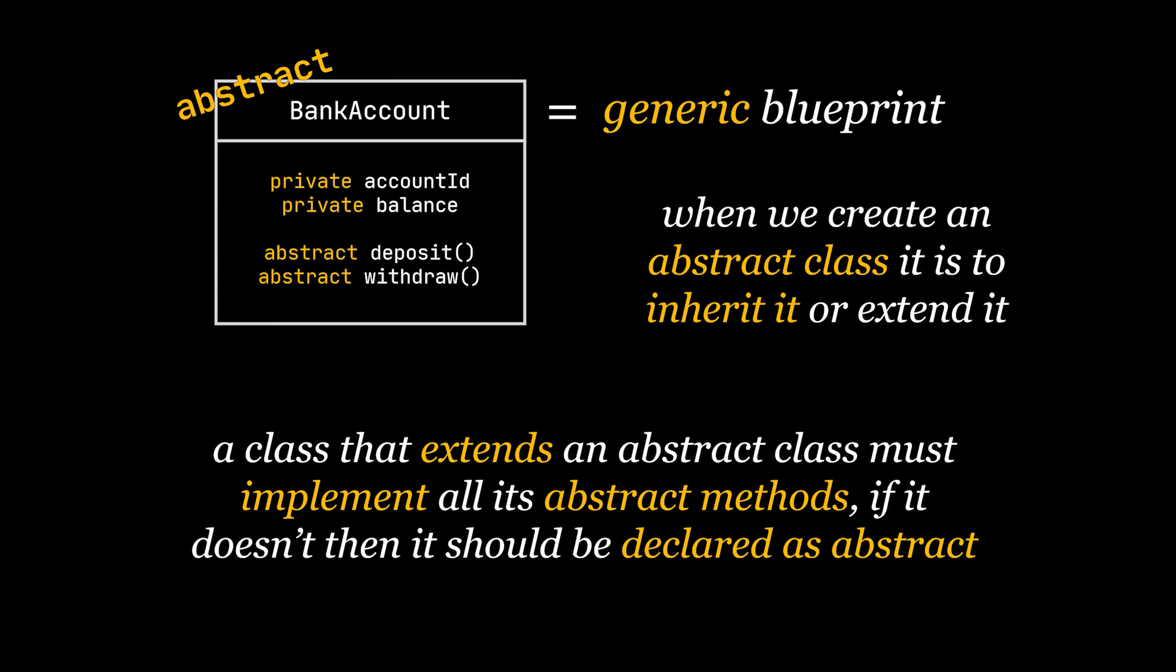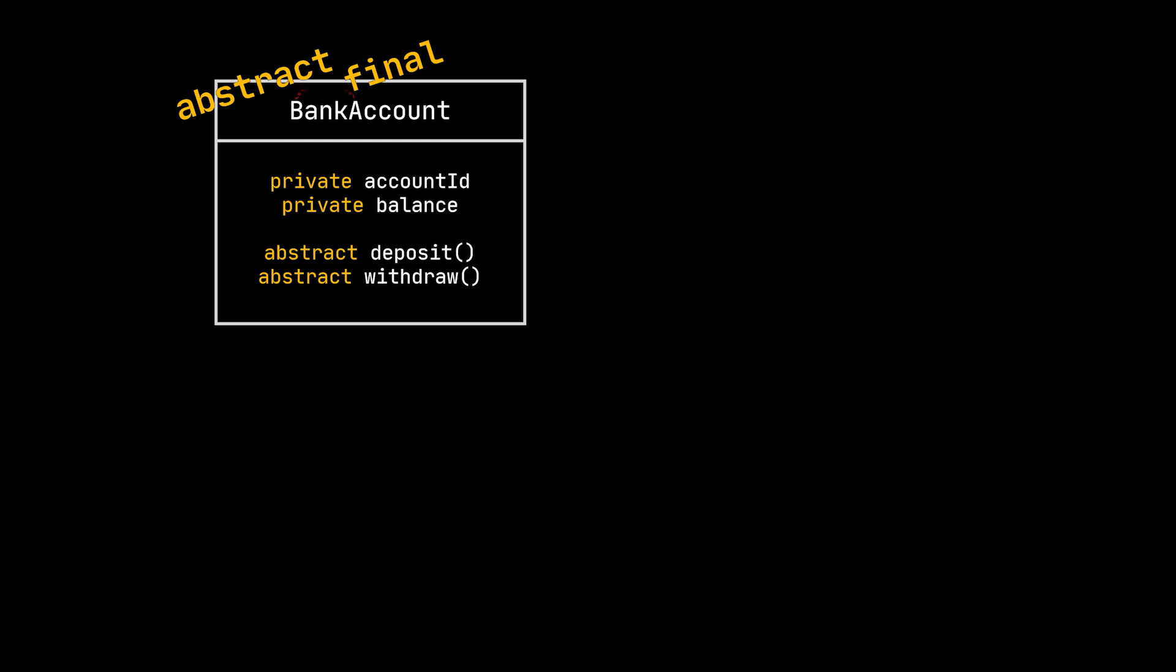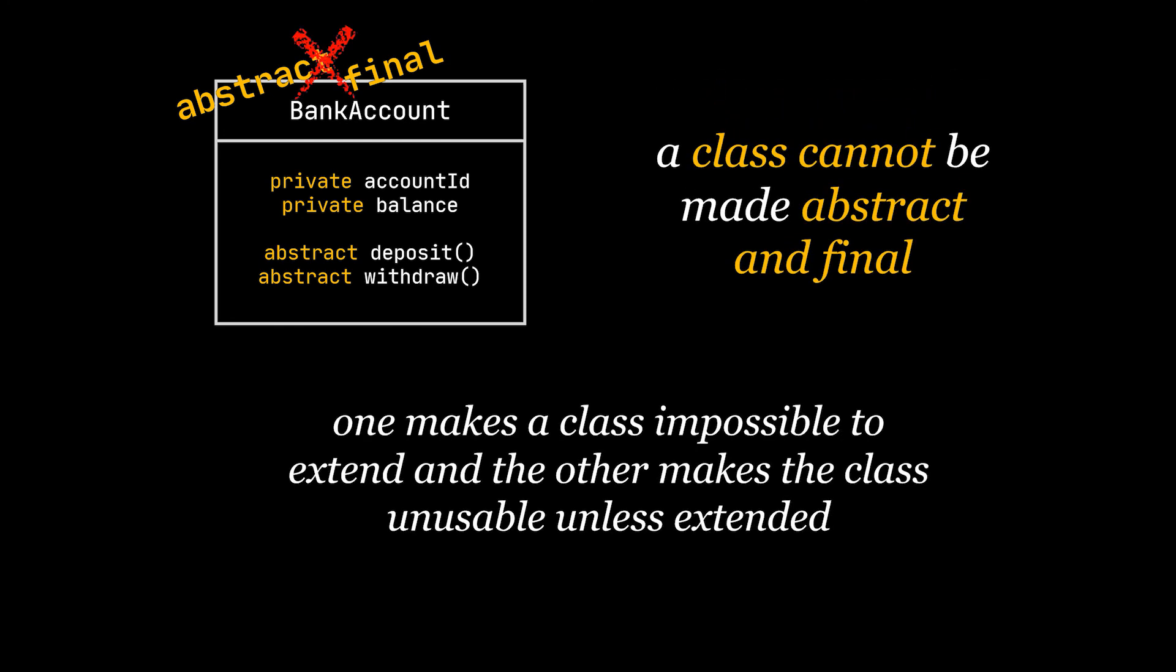The abstract keyword cannot be used with variables. Abstract classes cannot be made final because there will be no way of using them, as one makes a class impossible to extend and the other makes the class unusable unless extended.